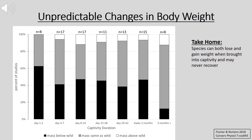The take-home message is that species can both lose and gain weight when brought into captivity and may never recover. This creates challenges for IACUCs because body weight is often one of the major ways we judge the health of an animal. Animals that are heavier have a larger buffer before body weight loss creates a problem, while those that have lost weight can become in trouble much earlier than normally anticipated. It's not always clear which species will show an increase, decrease, or stay the same when brought into captivity.